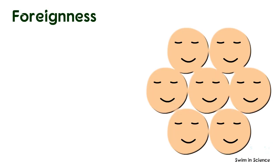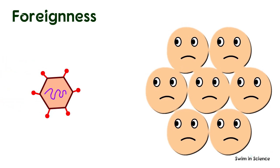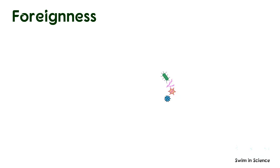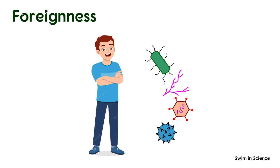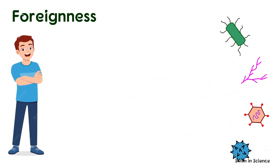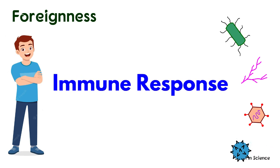In order to induce an immune response, a molecule must be recognized as foreign or non-self by the host. The immunogenicity of an antigen increases with an increase in the degree of foreignness. Generally, the greater the phylogenetic gap between two species, the greater will be the immune response.